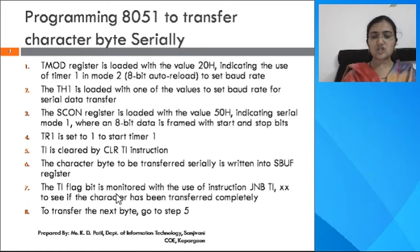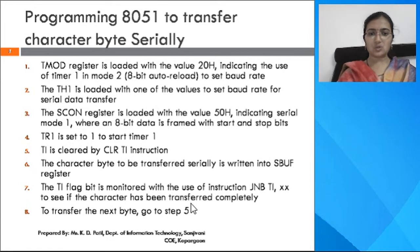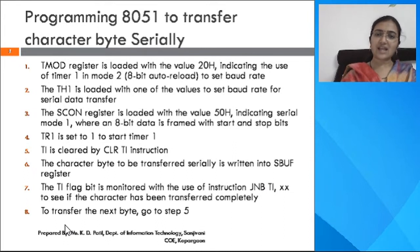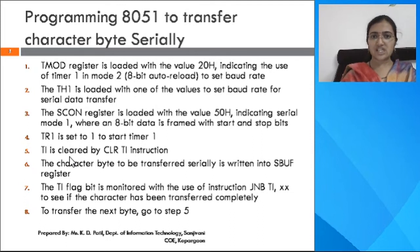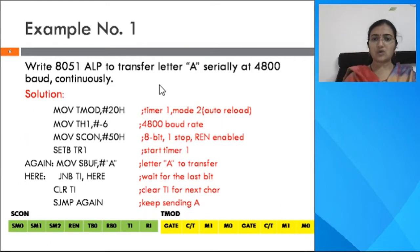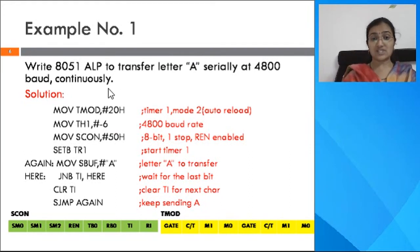The next step is to monitor the TI flag bit using the instruction JNB TI, target — here we use the polling method to see if the character has been transmitted successfully. If you want to transmit a second character, go back and first clear the TI flag bit to indicate a new character has been placed into the SBUF register. Now let us see example 1: write an 8051 ALP to transfer the letter A serially at 4800 baud continuously.